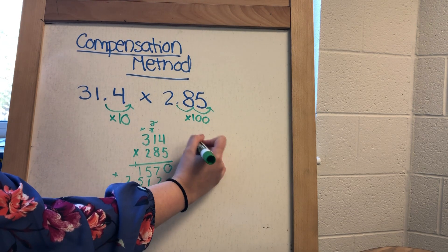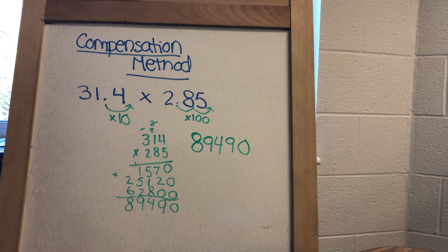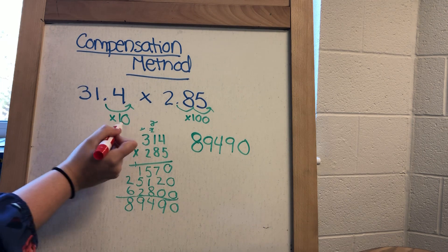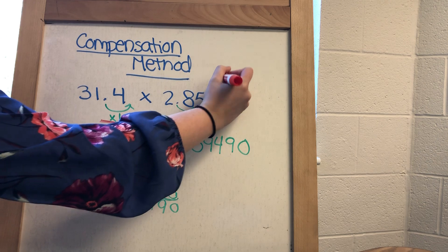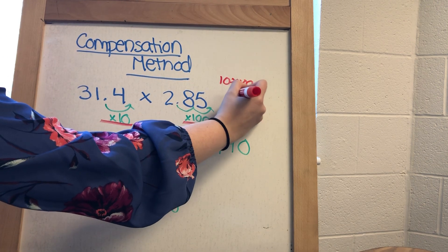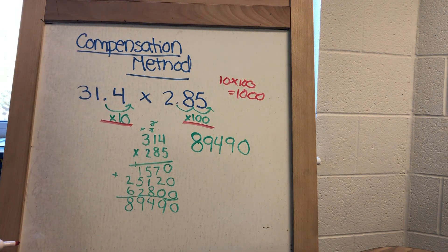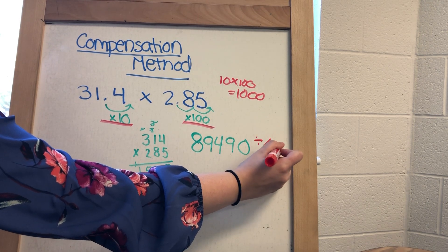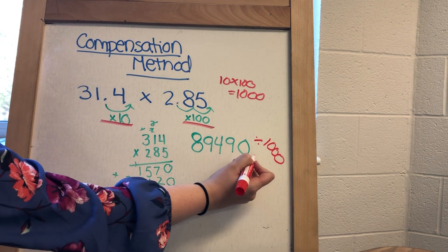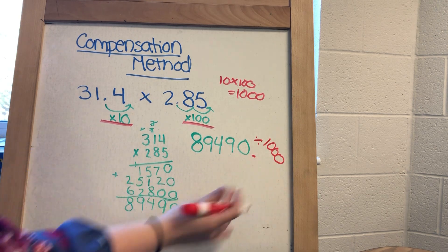So now that I have my number, 89490, I'm going to look back at what I multiplied by in the beginning, and then divide by that number. So I multiplied by 10, and I multiplied by 100. So 10 times 100 is 1,000. So in order to get my number back to where it needs to be, I need to divide by 1,000. When I divide by 1,000, my decimal place is here, and I'm going to move or shift my numbers over 3 times.